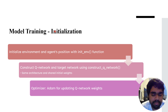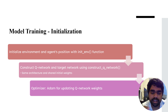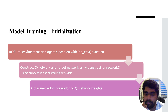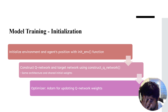For model initialization, we initialize the environment using the init_env function, which sets the agent's starting position. We then construct the Q-network and target network using the construct_q_network function. Both networks share the same architecture and initial weights. They work together — checking each other — to update, and we use the Adam optimizer for updating the Q-network weights.